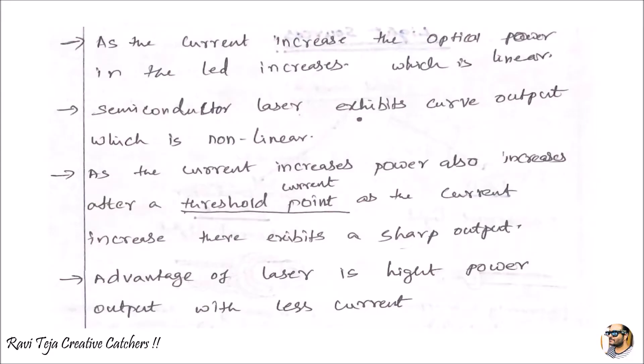In the laser, as the current increases the power also increases, but after a threshold point, even as the current is getting increased it exhibits a sharp output. Irrespective of the current, it exhibits a very sharp output which is nothing but the sharp wavelength or the directional light which you generally observe in lasers.